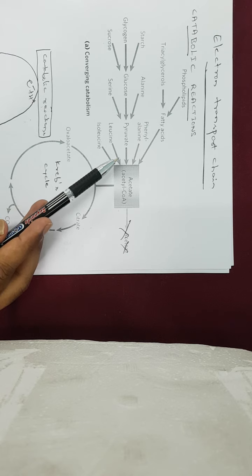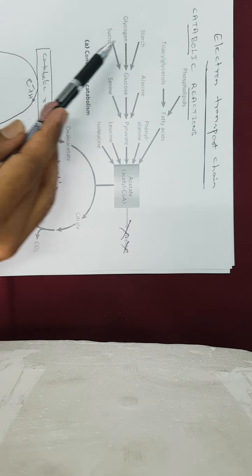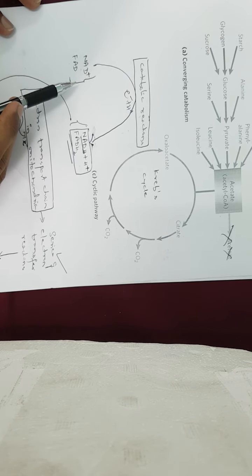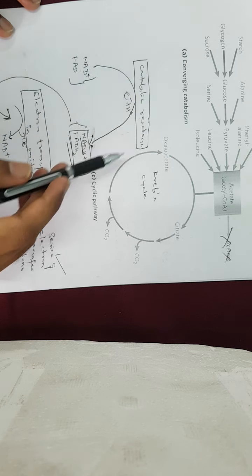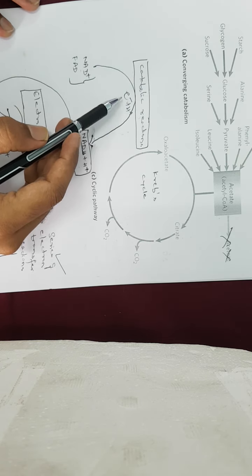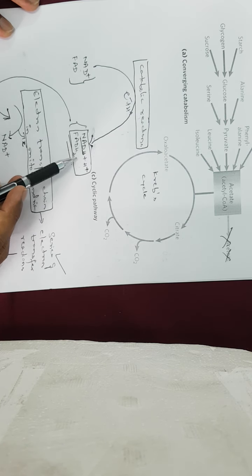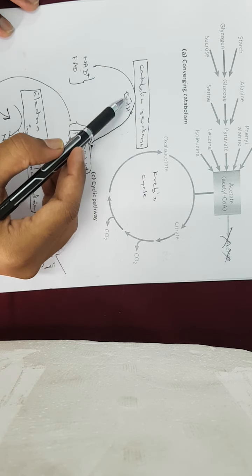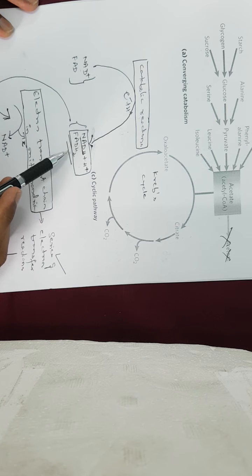But how exactly do all these catabolic reactions provide energy to the cells? In all these catabolic reactions of the different biomolecules, very importantly, molecules such as NAD and FAD are going to be converted into NADH and FADH2. In other words, NAD and FAD capture electrons from the catabolic reactions and get reduced into NADH and FADH2, thereby extracting energy from the catabolic reactions in the form of electrons.